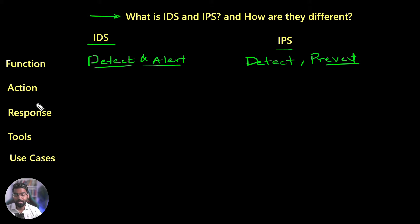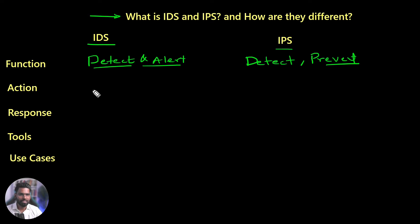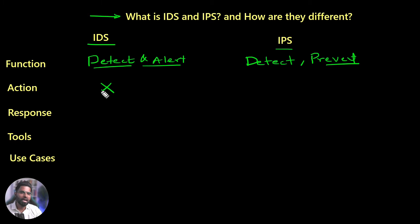Let's talk about the action itself. IDS is technically a passive device — it just takes a copy of the traffic sitting in the network, so it cannot take any action. It will only give you the alert so that you then decide what to do.